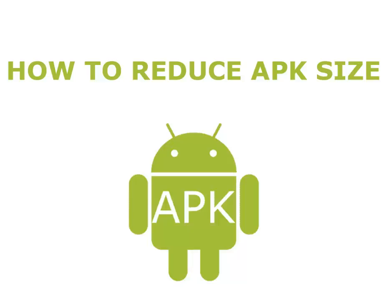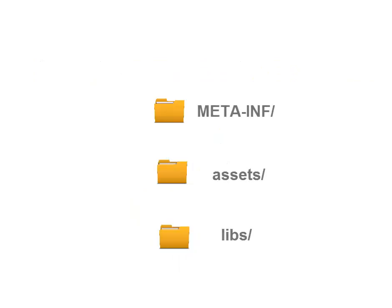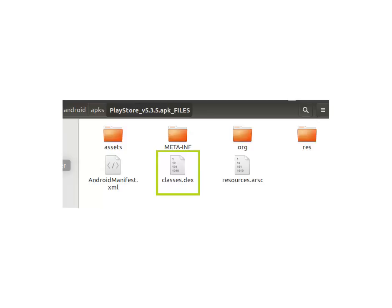First of all, you need to understand the APK structure before you get to know how to reduce the size of your application. An APK contains the following directories: the meta information, which contains the CERT.sf and CERT.rsa signature files, as well as the manifest.mf file. It contains the assets folder, the res which is the resources of the application, and the lib which contains the compiled code specific to the software layer of a processor. An APK also contains the following files: the manifest.xml, which is mandatory, and the classes.dex, which is the compiled DEX file format understood by the Dalvik virtual machine.